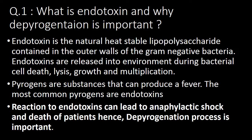First basic question: what is endotoxin and why is the depyrogenation process important? Endotoxin is the natural heat-stable lipopolysaccharide contained in outer walls of the gram-negative bacteria. Endotoxins are released into the environment during bacterial cell death, lysis, growth and multiplication. Pyrogens are substances that can produce fever. The most common pyrogens are endotoxins. Reaction to endotoxins can lead to anaphylactic shock and death of the patient. Hence depyrogenation process is very important in injectable manufacturing.